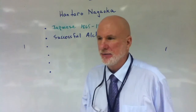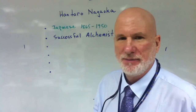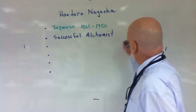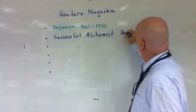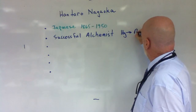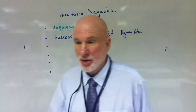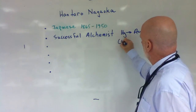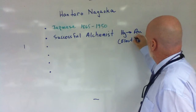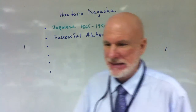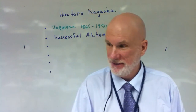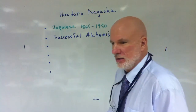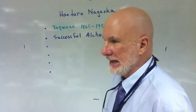Is that spelled correctly? Alchemist? I have human spellcheckers here. He converted mercury to gold using electricity. Isn't that amazing? He did it. And when did he do that? 1924. Amazing.